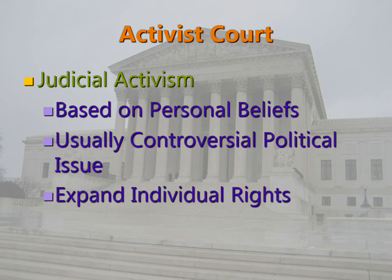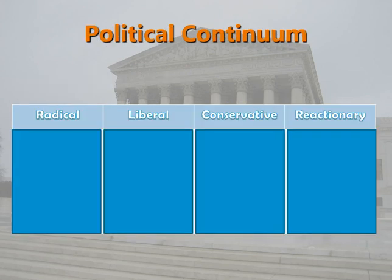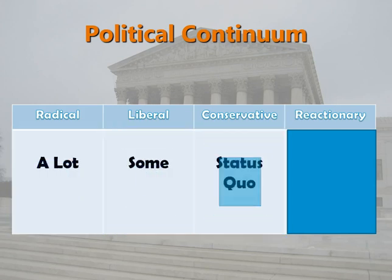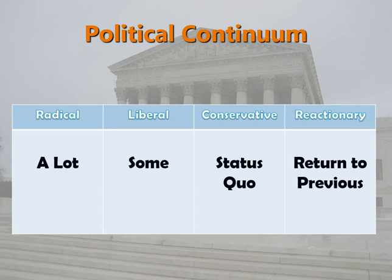Sometimes we can talk about a court as being an activist court. Judicial activism is when a Supreme Court justice makes decisions based on their personal beliefs. Instead of deciding things based on what the Constitution directly says, judicial activism usually means trying to make a change in current policy. On a political continuum, activist justices are generally considered radical or liberal — people who want a lot of change — while conservative and reactionary justices want things to stay the way they are or go back to the past.